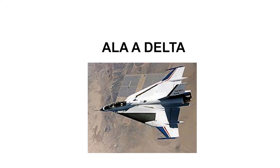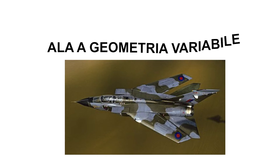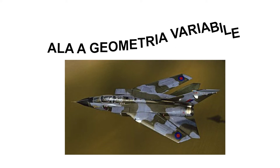Ala a delta: tipica di aerei destinati a velocità supersonica, caratterizza i Mirage francesi di Dassault. Ala a geometria variabile: unisce ai vantaggi dell'ala a delta una migliore manovrabilità alle basse velocità. L'angolo di freccia dell'ala è in genere imposto da un computer di bordo e non gestito direttamente dal pilota.